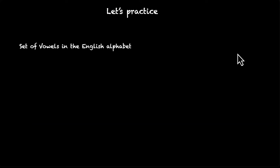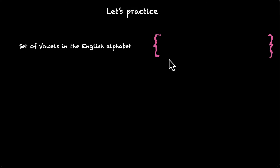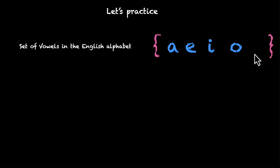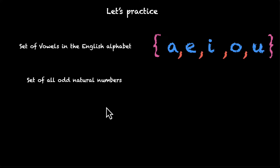Let's do some practice. Let's say we want to write the set of vowels in the English alphabet. Again, curly brackets and then the answer inside: A, E, I, O, and U, separated by commas. That's the roster method.